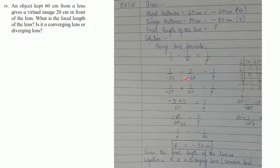Minus and minus will become plus. It becomes 1 upon minus 20 plus 1 upon 60 is equal to 1 upon F.